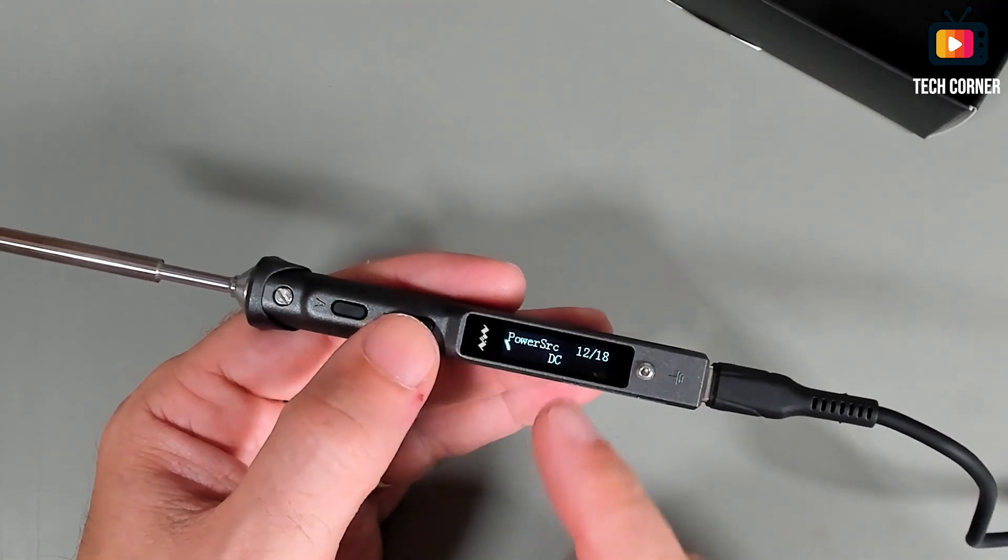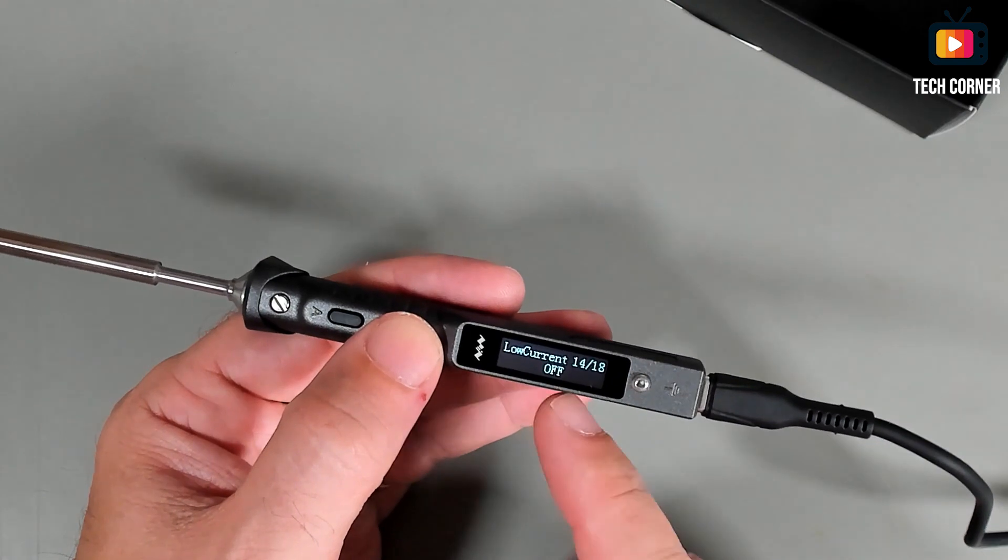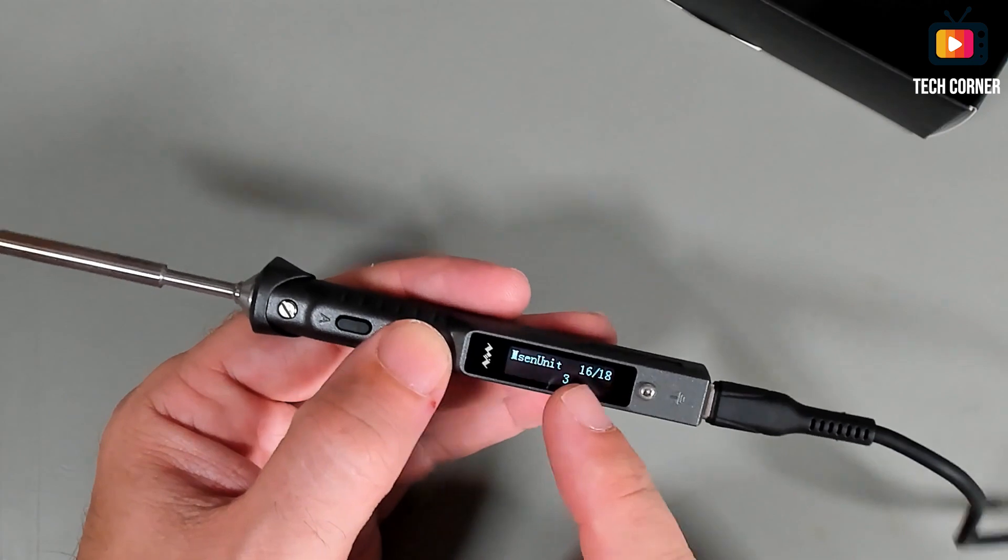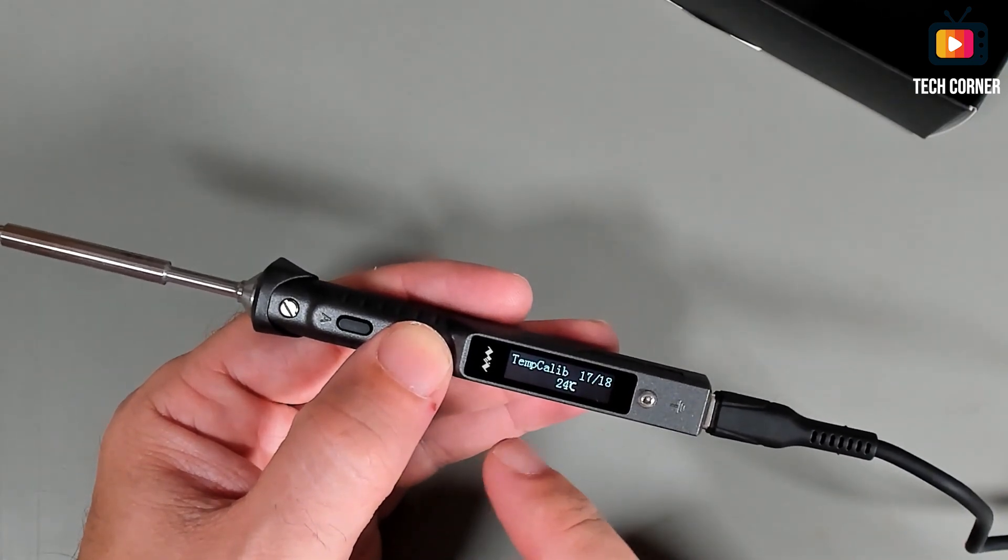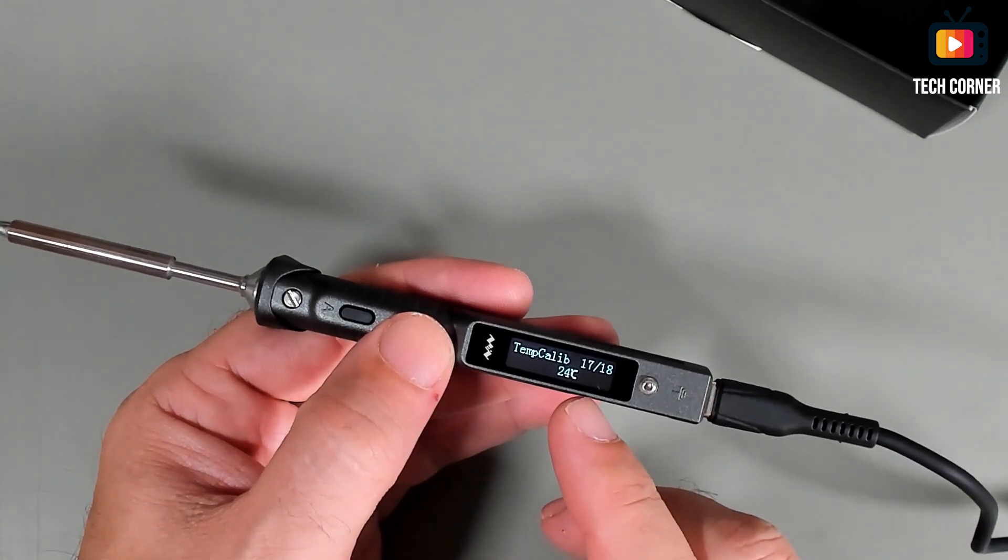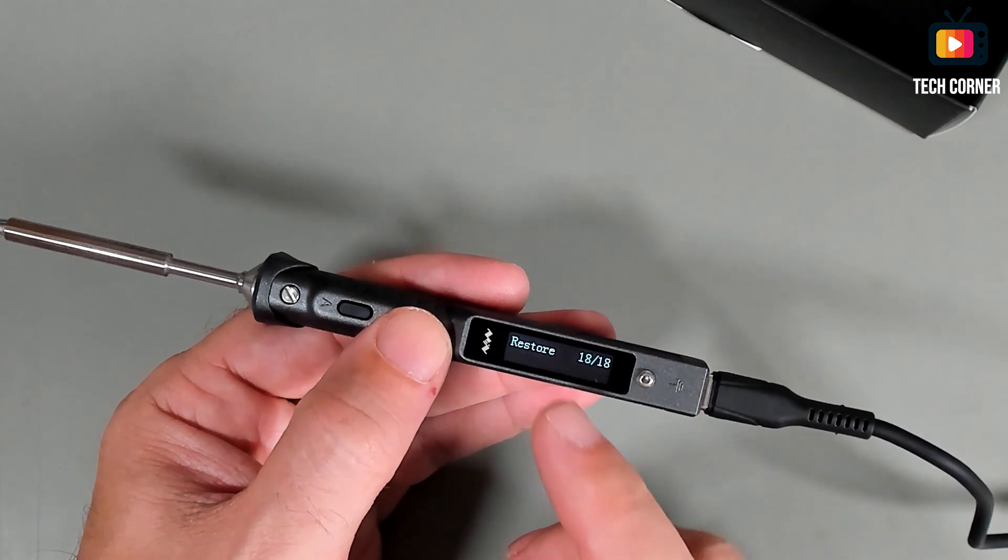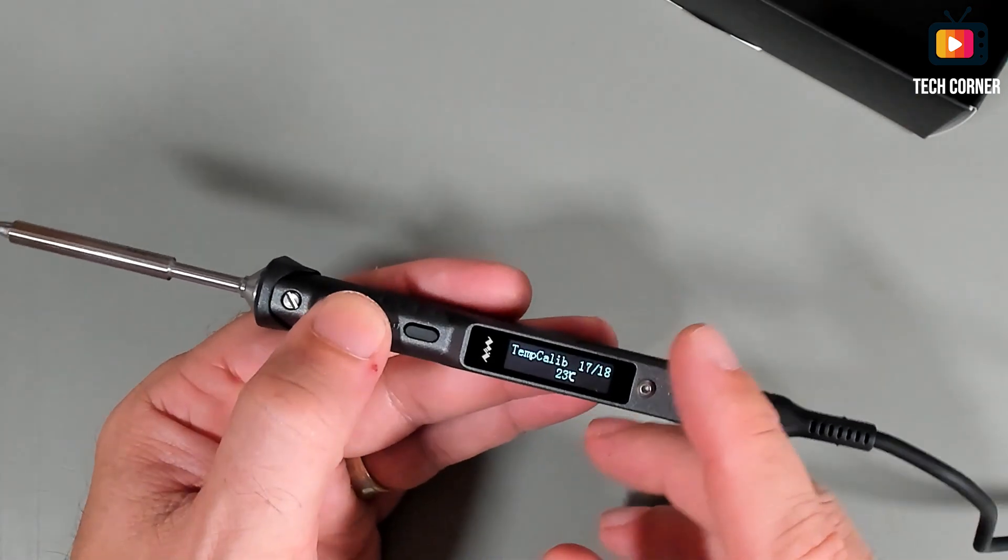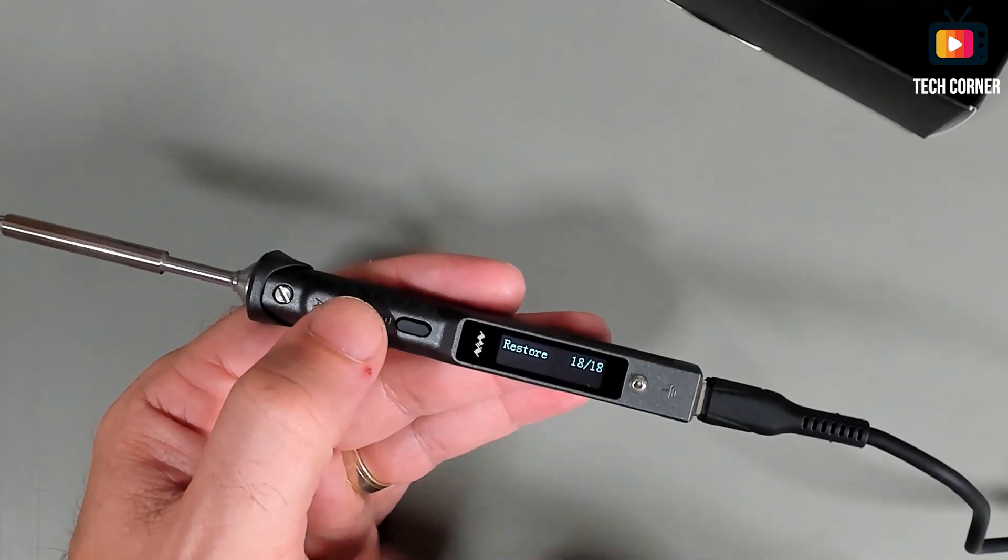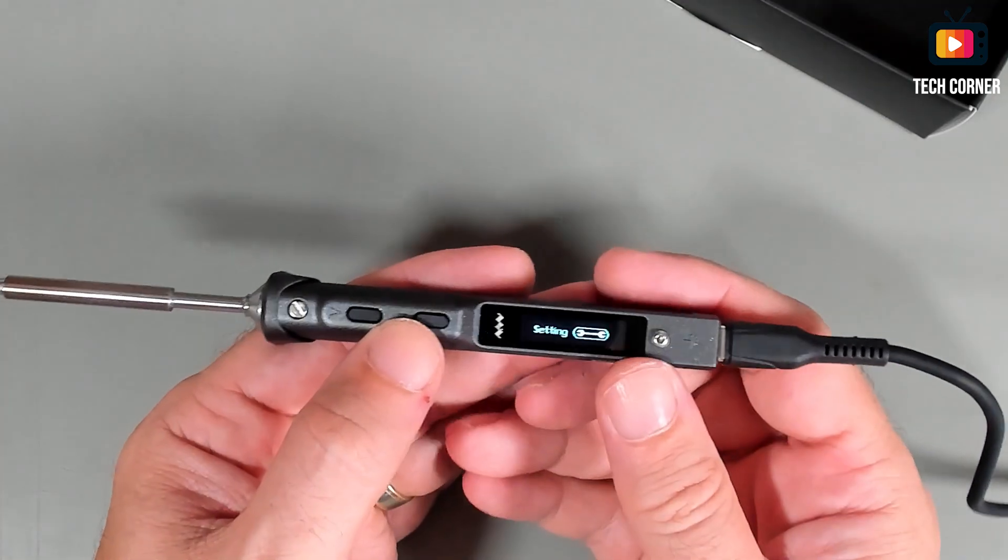Also the power source. Okay, minimum voltage, low current off or on. PDP wattage maximum. Measure unit. This is the temperature right now. The environment temperature is 23, 24 degrees. And to restore, to restore everything, let me press a bit. Completed. It restored all settings. Let's now see the heating part.